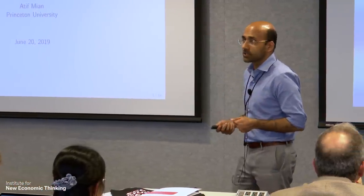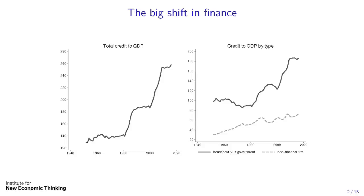I'm more interested in the long-term trends of what has happened to credit. I'll start with a picture motivated by the work of Jordà, Schularick, and Taylor — total credit to GDP. I'm plotting this for the U.S., but you could plot it for advanced economies and the basic picture doesn't change. I'm showing total credit in the left panel, which has three pieces: household, non-financial firm, and government credit. The definition of credit is always gross — there's no such thing as net credit, which is always zero by definition.